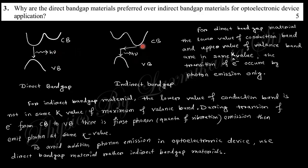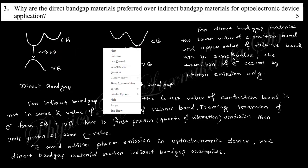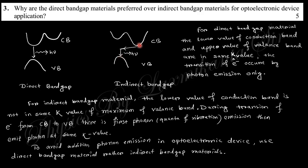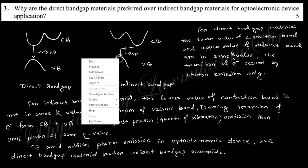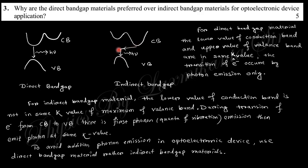In direct bandgap, when electrons jump from conduction band to valence band, only photons are emitted with energy equal to the separation, hν. In indirect bandgap, electrons cannot directly jump because k values are different. First, the k value changes by emitting phonons during transition, then photons are emitted.